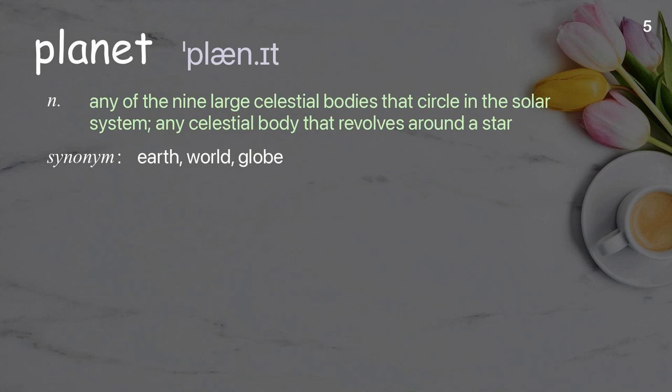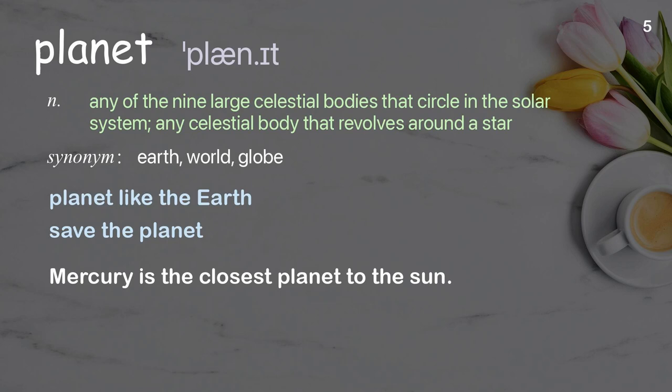Planet: any of the nine large celestial bodies that circle in the solar system; any celestial body that revolves around a star. Examples: planet like the earth, save the planet. Mercury is the closest planet to the sun.